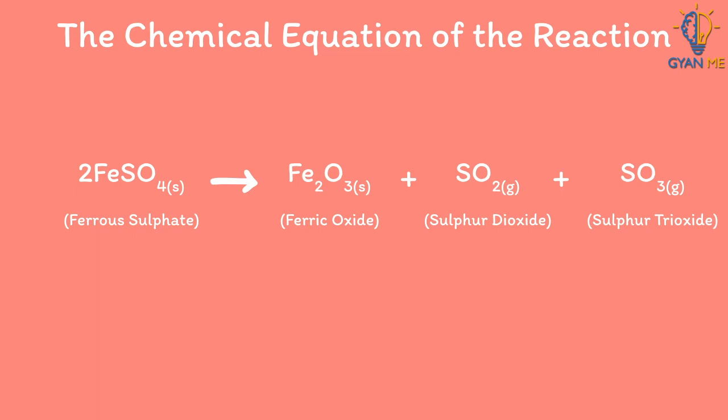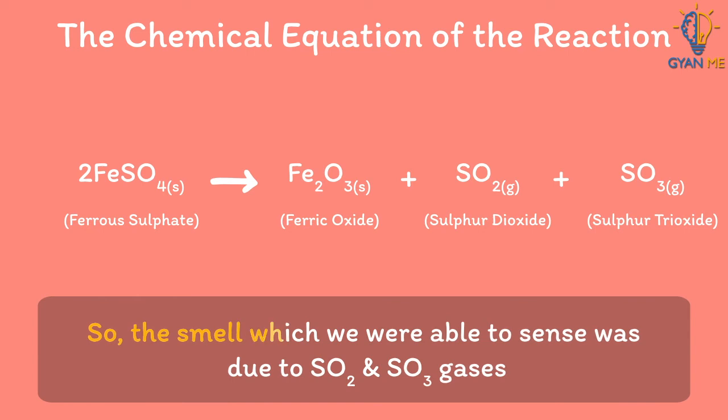As you rightly observed from the chemical equation, ferric oxide is solid, while sulphur dioxide and sulphur trioxide are gases. So the smell which we were able to sense was due to sulphur dioxide and sulphur trioxide gases.